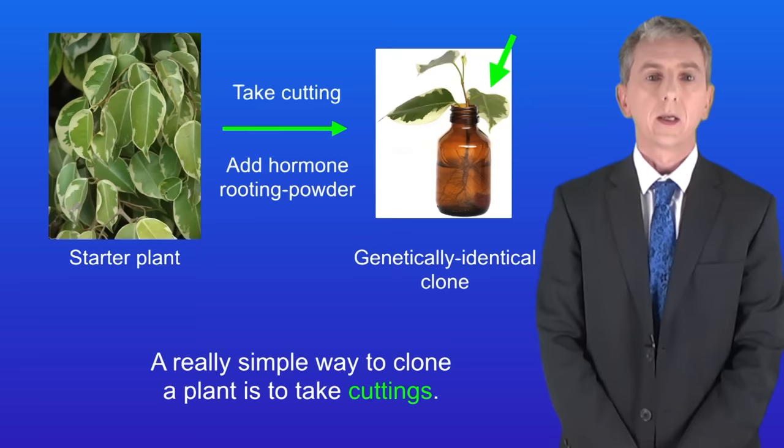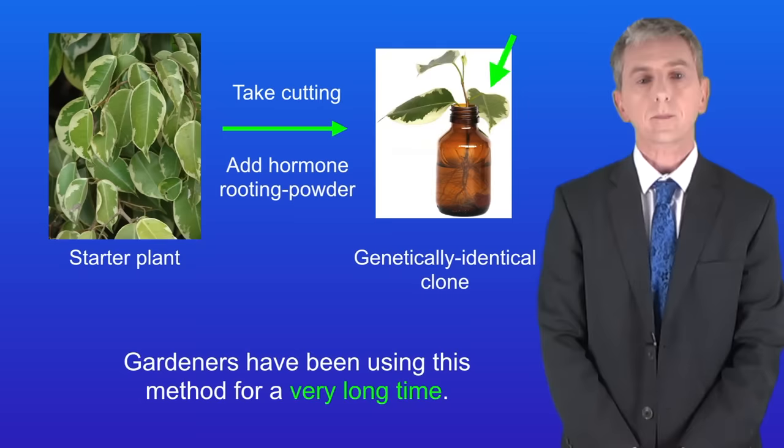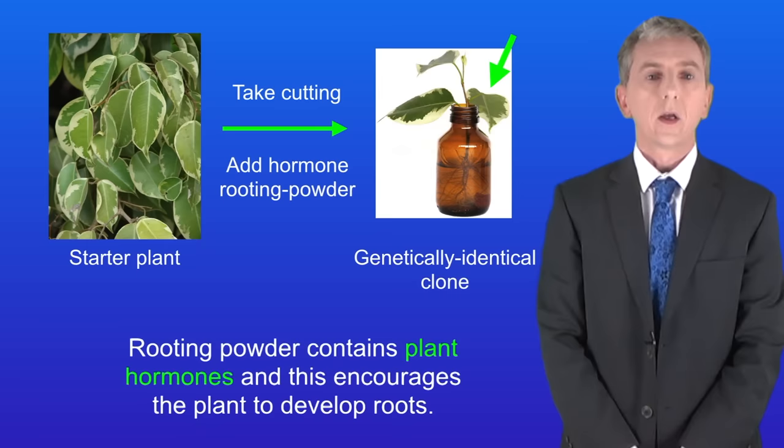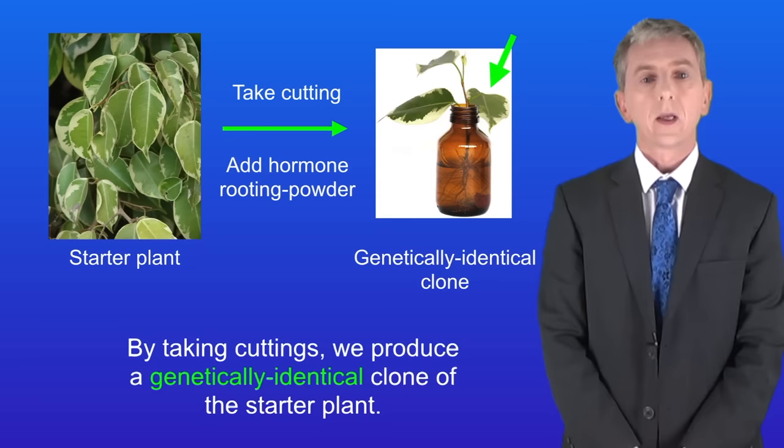A really simple way to clone a plant is to take cuttings, and gardeners have been using this method for a very long time. A small piece of the plant is removed and the end is dipped in rooting powder. Rooting powder contains plant hormones and this encourages the plant to develop roots. By taking cuttings we produce a genetically identical clone of the starter plant.